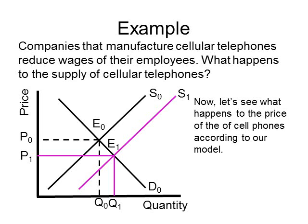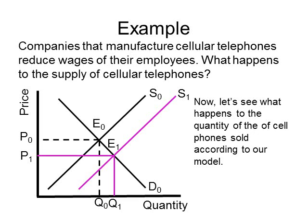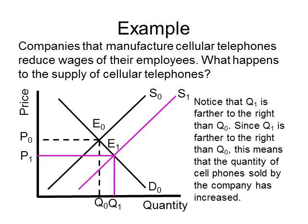Let's see what happens to price and quantity according to our model. Notice that P1 is lower than P0 on the price axis, meaning the price of cell phones has decreased. Notice that Q1 is farther to the right than Q0 on the quantity axis, meaning the quantity of cell phones sold has increased. This gives you an example of how to solve supply problems using a diagram and the table of shifts. Remember to memorize the table — it will speed up your work.